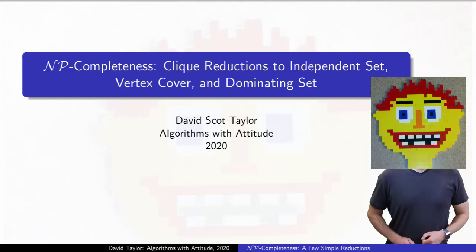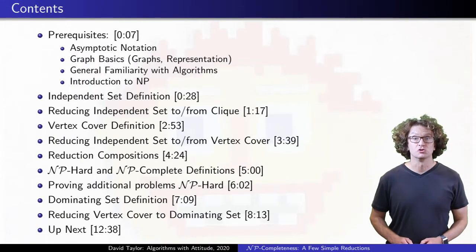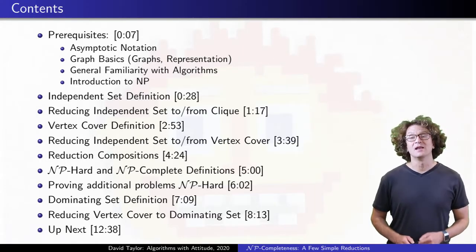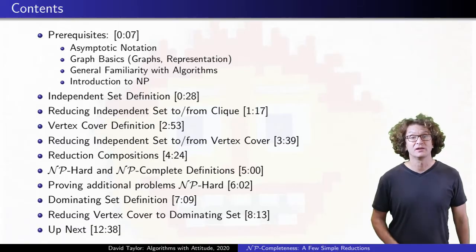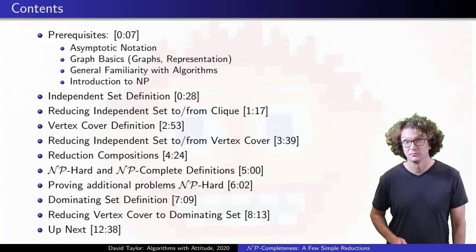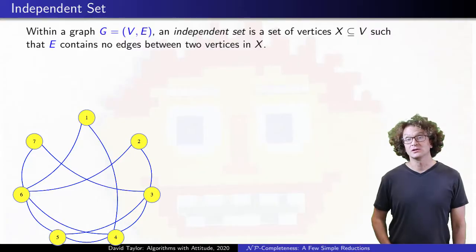This video introduces NP-completeness and reductions, with a few different graph problems as examples. Before watching it, you should know about asymptotic notation and graphs, be familiar with algorithms in general, and you should watch the first video in the NP playlist that defines NP, at least until it starts discussing optimization algorithms versus decision algorithms, so you should know what the clique problem is. I'll start here by defining the independent set problem.